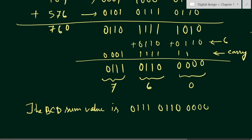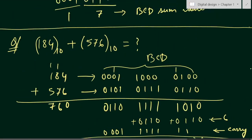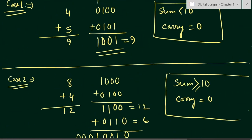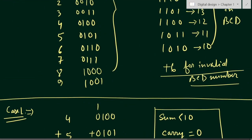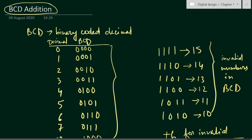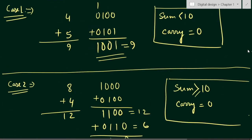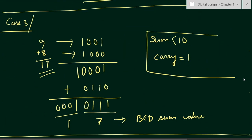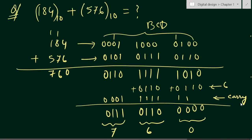The final BCD sum value is 0111 0110 0000 0000. In this way you can add any BCD numbers. Thank you for watching — if you have any questions please put them in the comment section below, and please like, share, and subscribe to the channel.